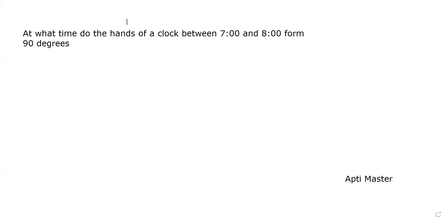So this is our new question for problems related to clocks. The question is: at what time do the hands of a clock between seven and eight form 90 degrees?